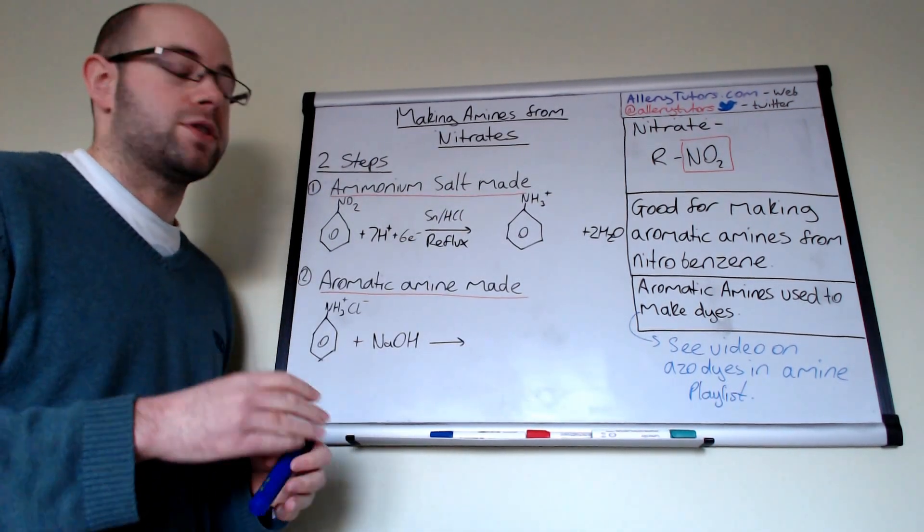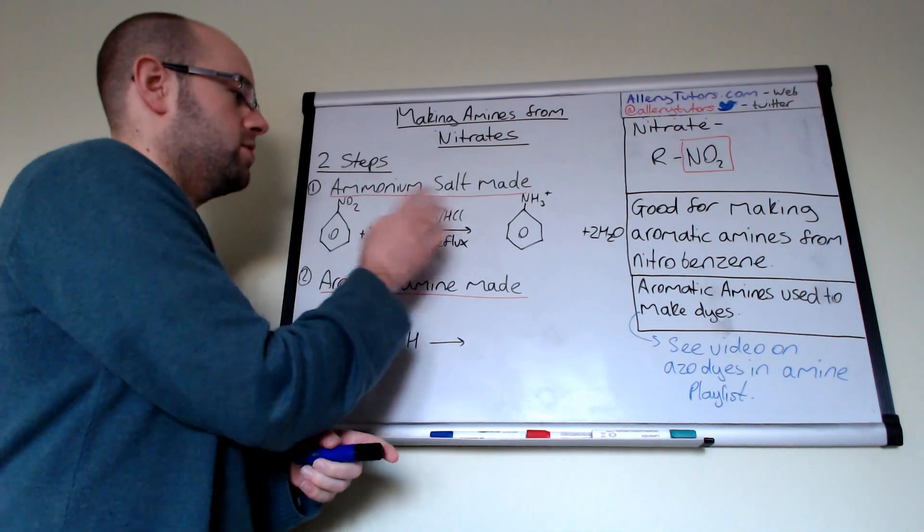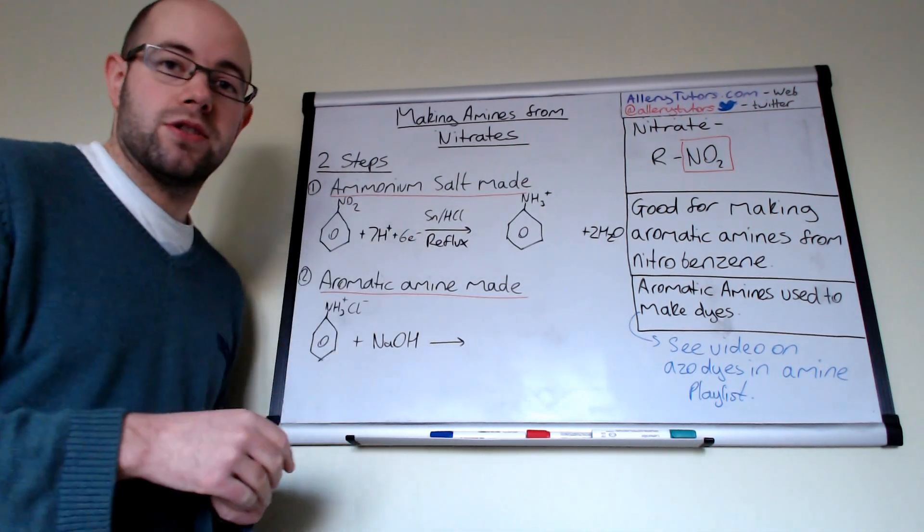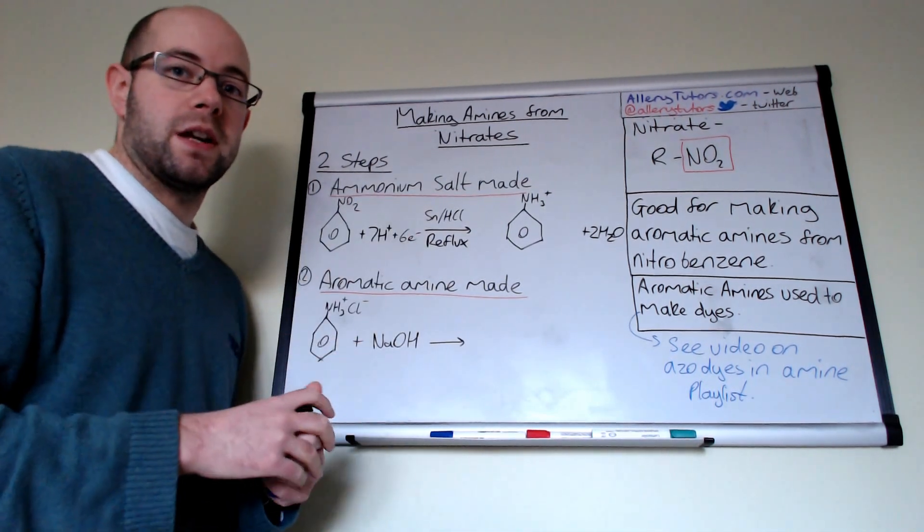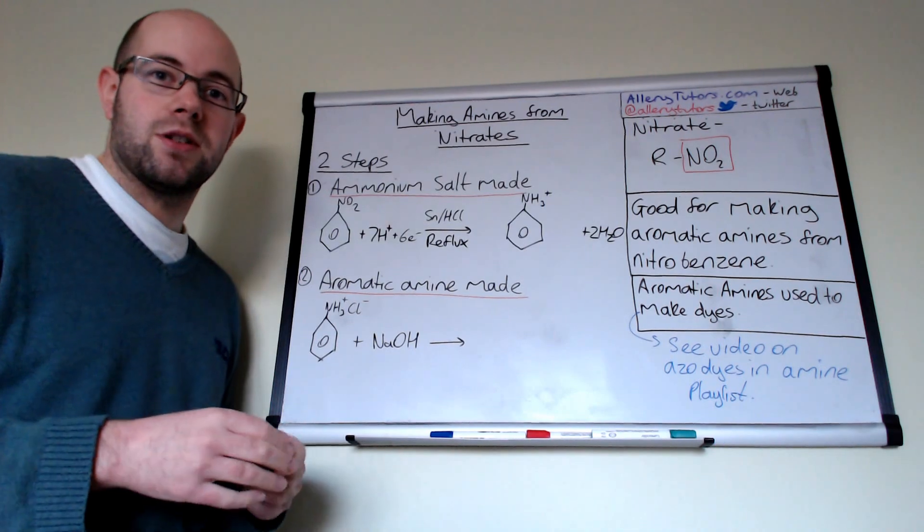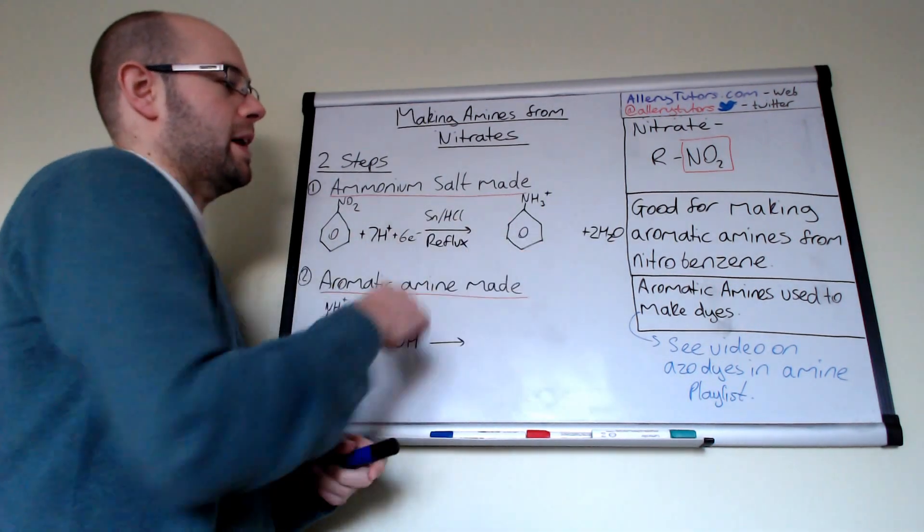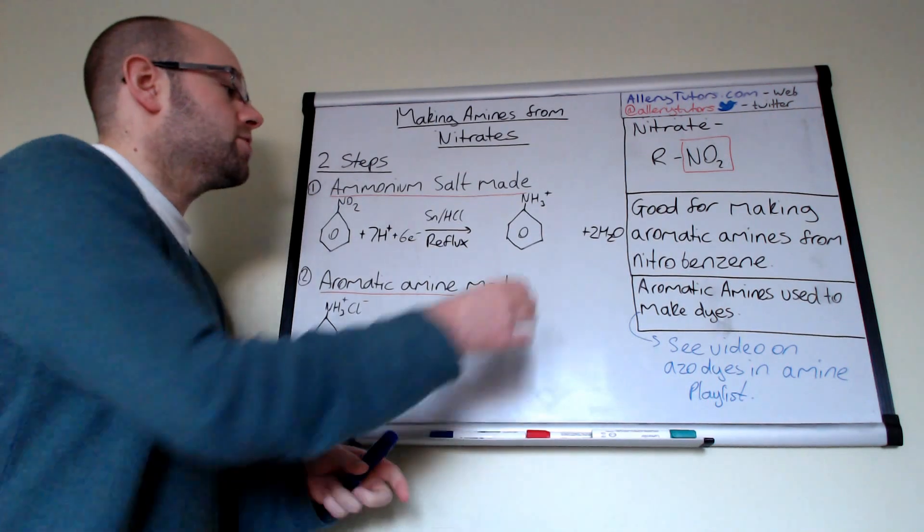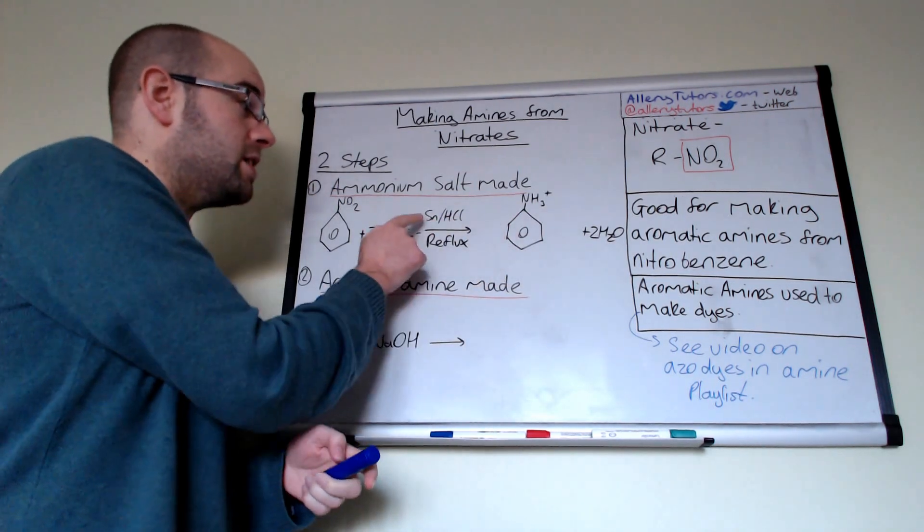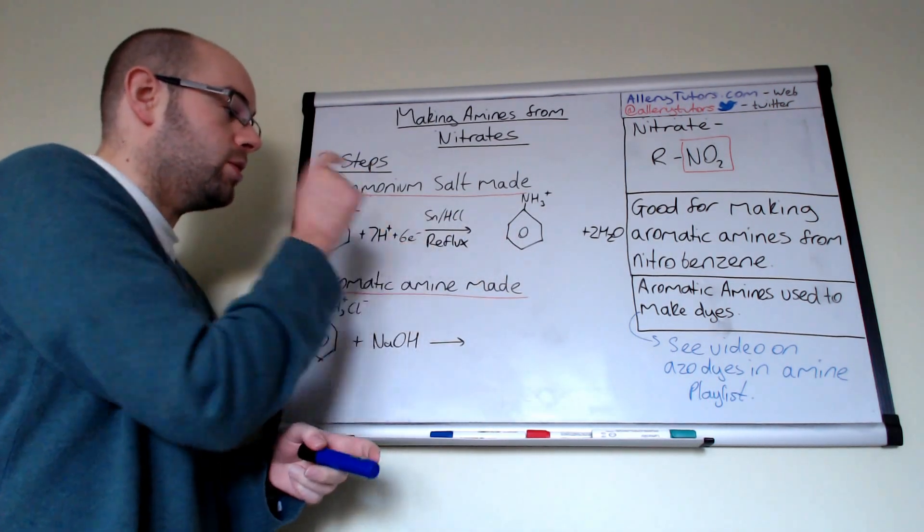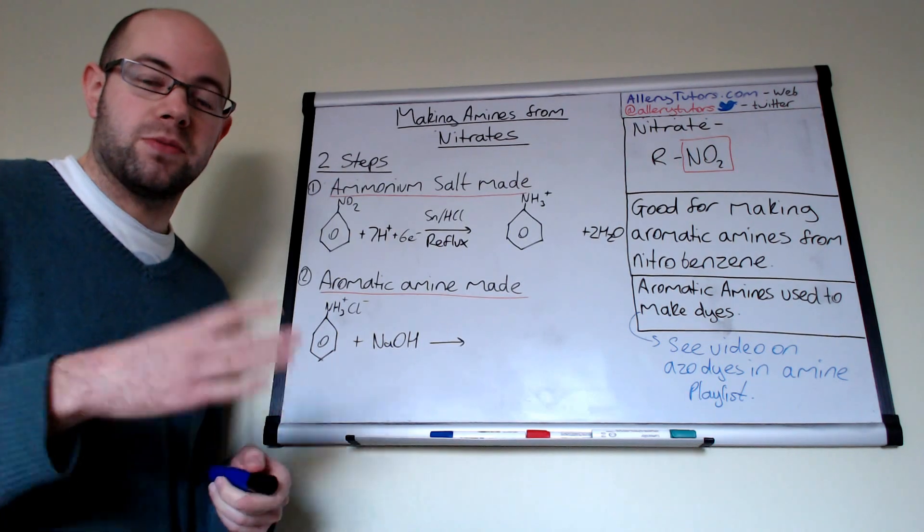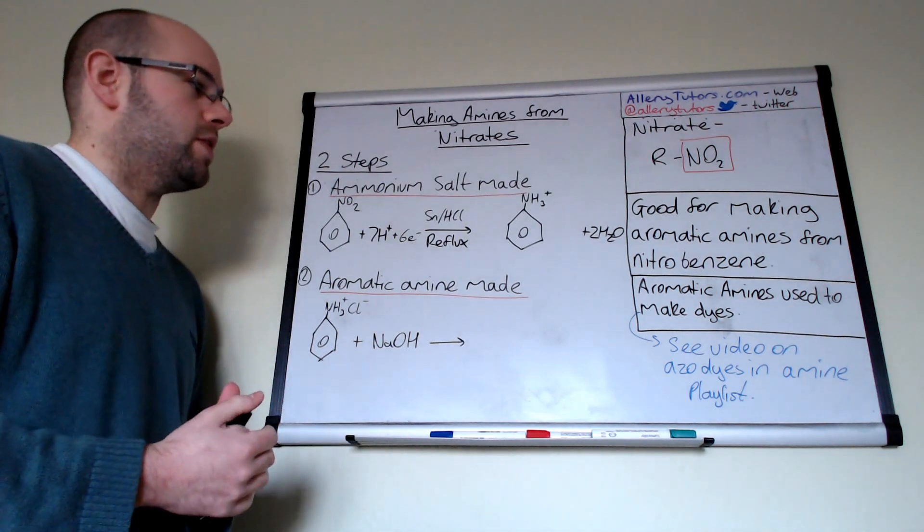But again, like I say, in the exam, for exam purposes you're not expected to know where these reagents come from, but you might be expected to apply your AS chemistry knowledge of redox equations to actually balance this equation here. So that's why we need the tin and the HCl there, and all this is done under reflux as well, so we're heating it gently under a reflux condition.